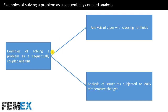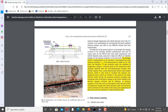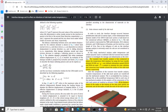Now I want to talk about examples of solving a problem as a sequentially coupled analysis. In simulations like analysis of pipes with crossing hot fluids or analysis of structures subjected to daily temperature changes, we can conduct a sequentially coupled analysis instead of a fully coupled thermal stress analysis. I want to show you a paper whose authors have done a sequentially coupled thermal stress analysis: 'Interface damage and its effect on vibration of a slab track under temperature and vehicle dynamic loads.' In this study, mechanical analysis under temperature and vehicle dynamic loads is combined with the transient heat transfer analysis to investigate the damage and delamination at the interface.